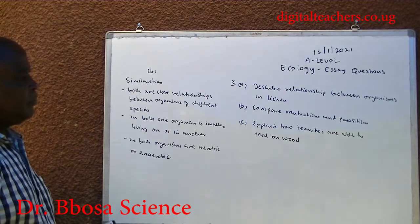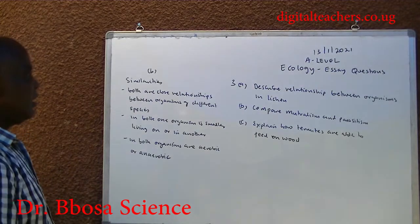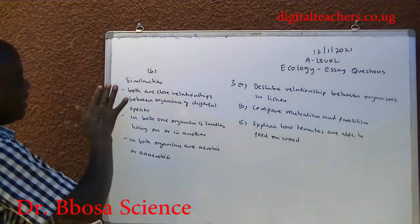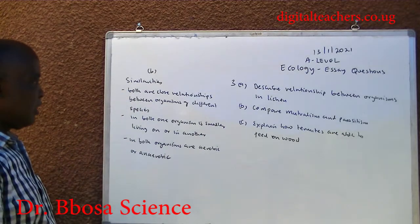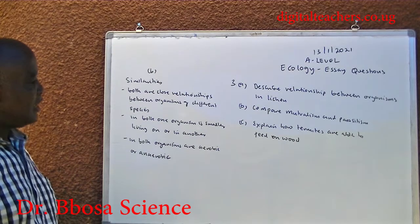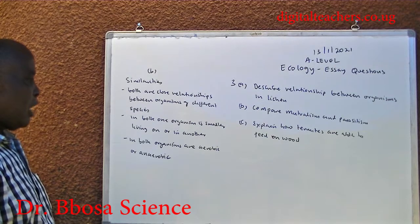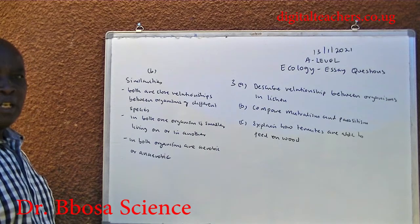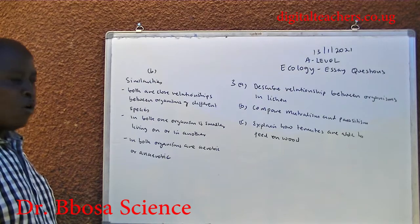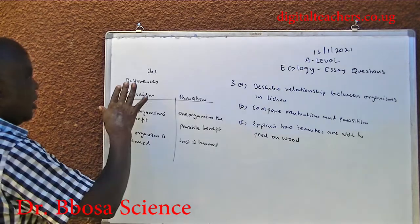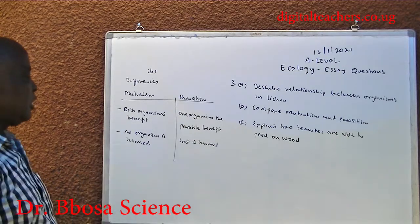B. Compare requires giving similarities and differences. Similarities between mutualism and parasitism: both are close relationships between organisms of different species. In both, one organism is smaller, living on or in another. In both, organisms are aerobic or anaerobic. In mutualism, both organisms benefit.